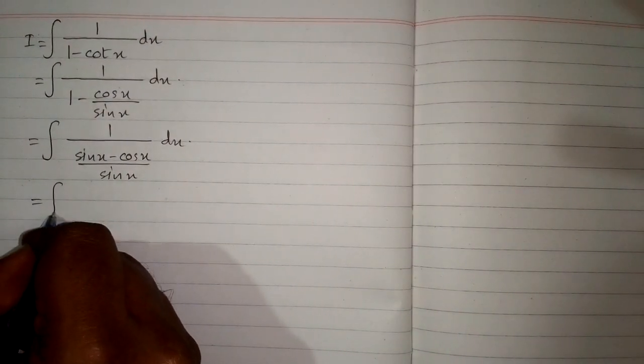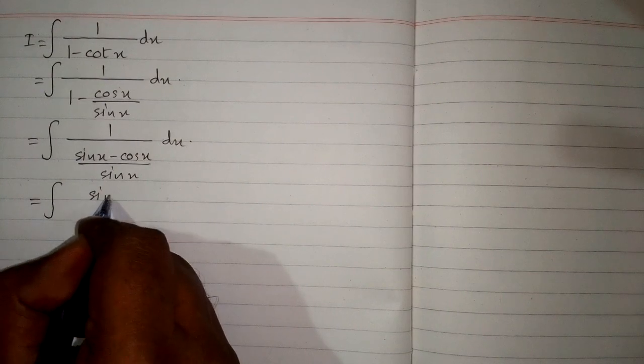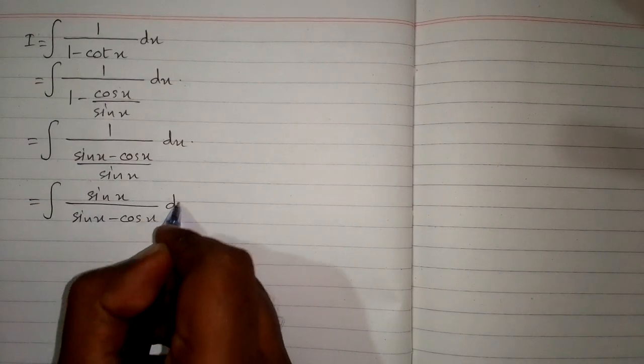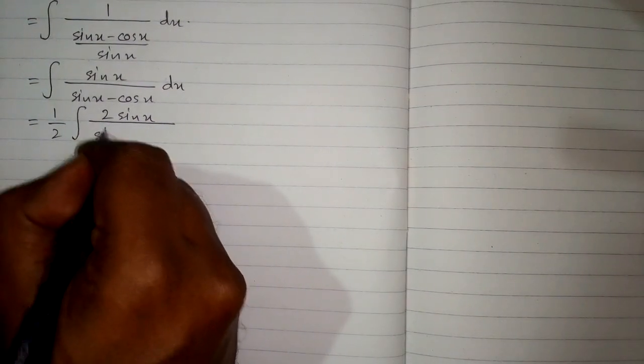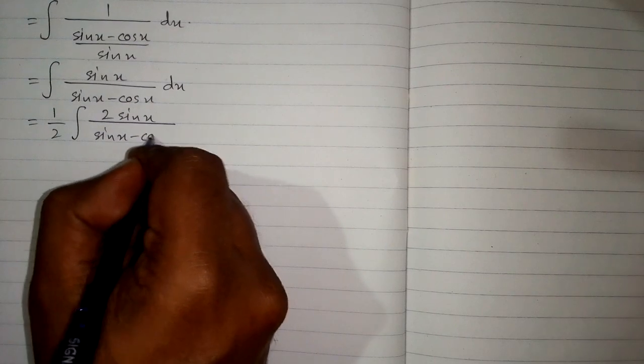Then we have the integral of sin x upon sin x minus cos x dx. Now we multiply and divide this integral by 2, so we have one half multiplied by the integral of 2 sin x upon sin x minus cos x dx.